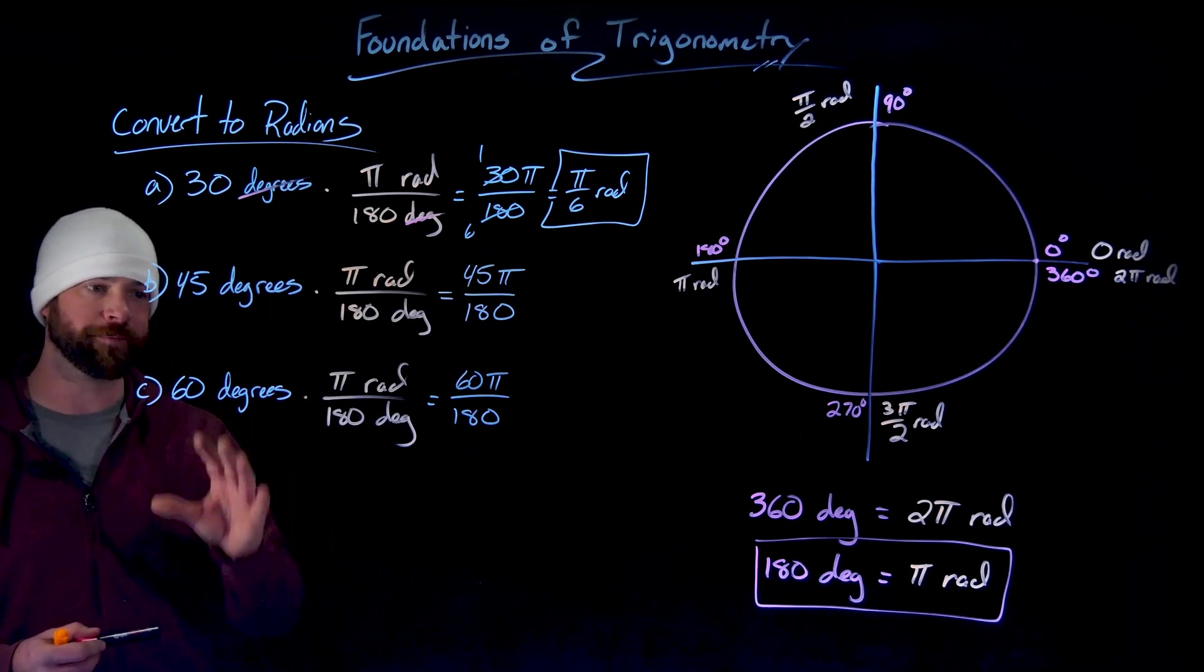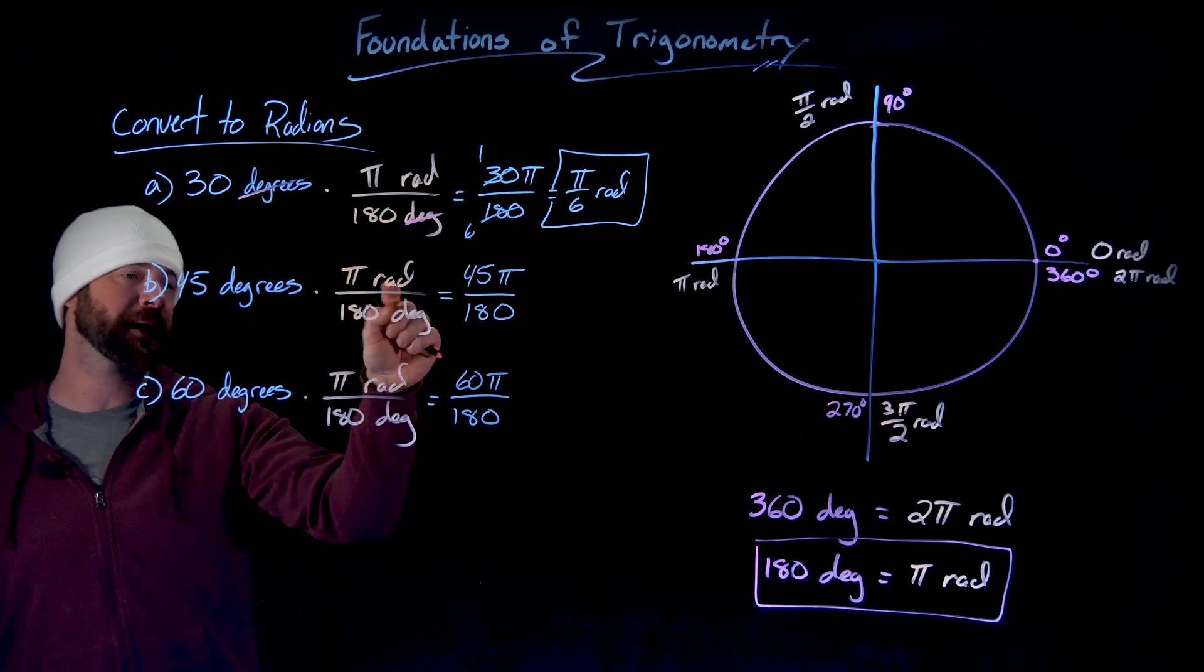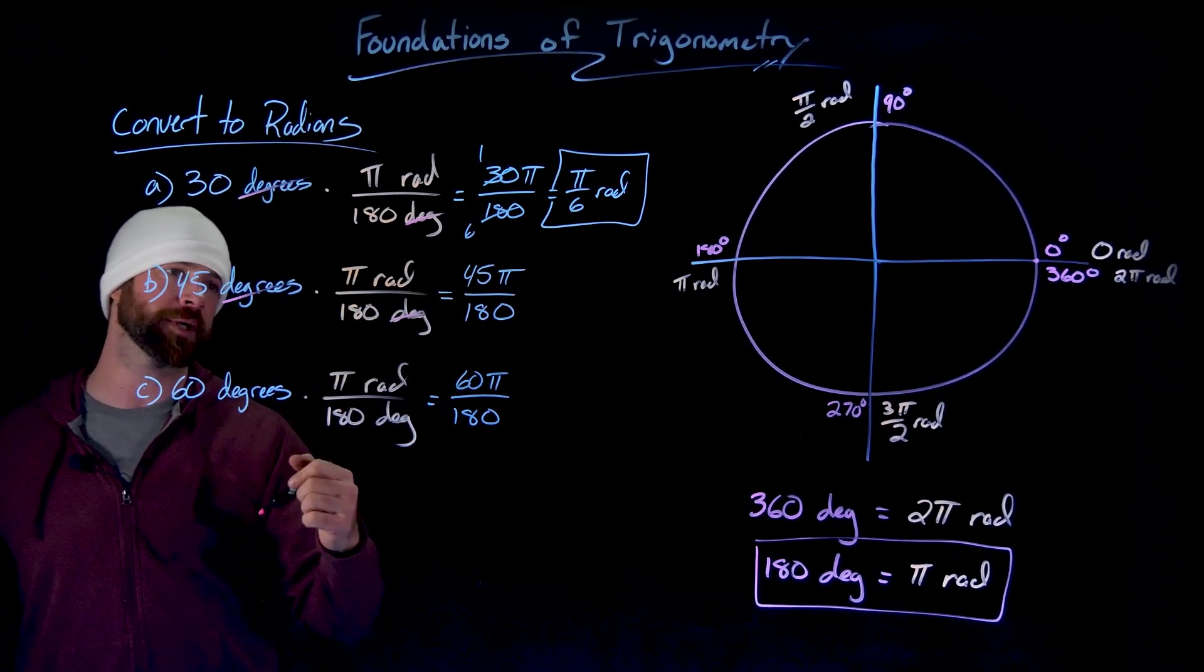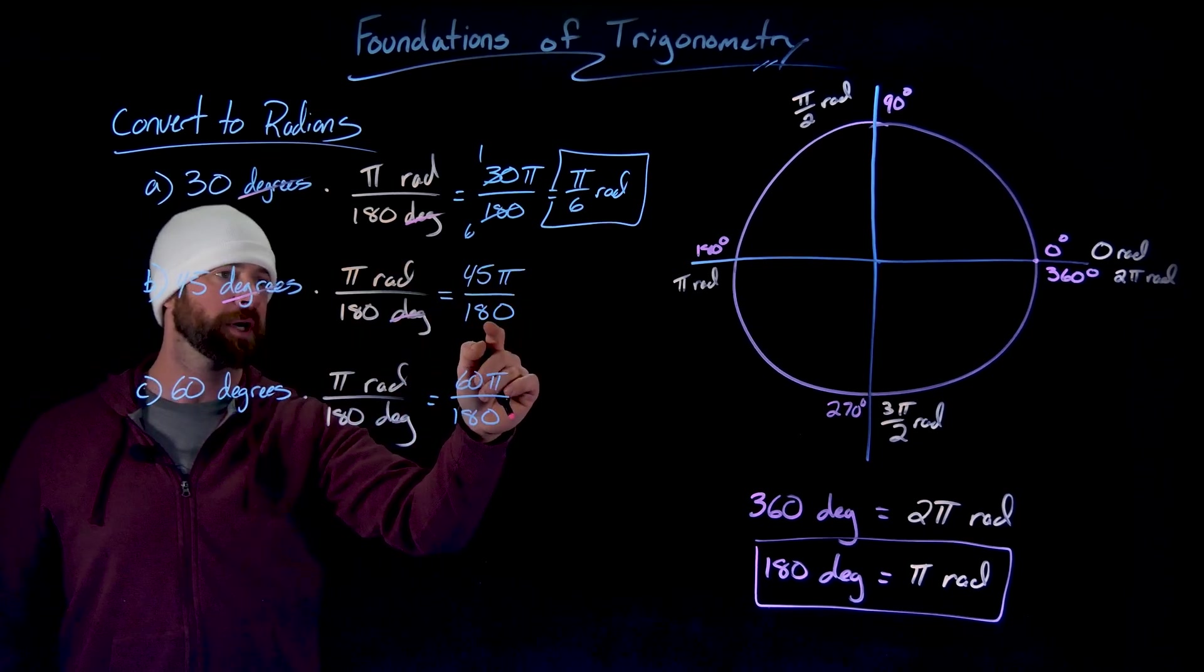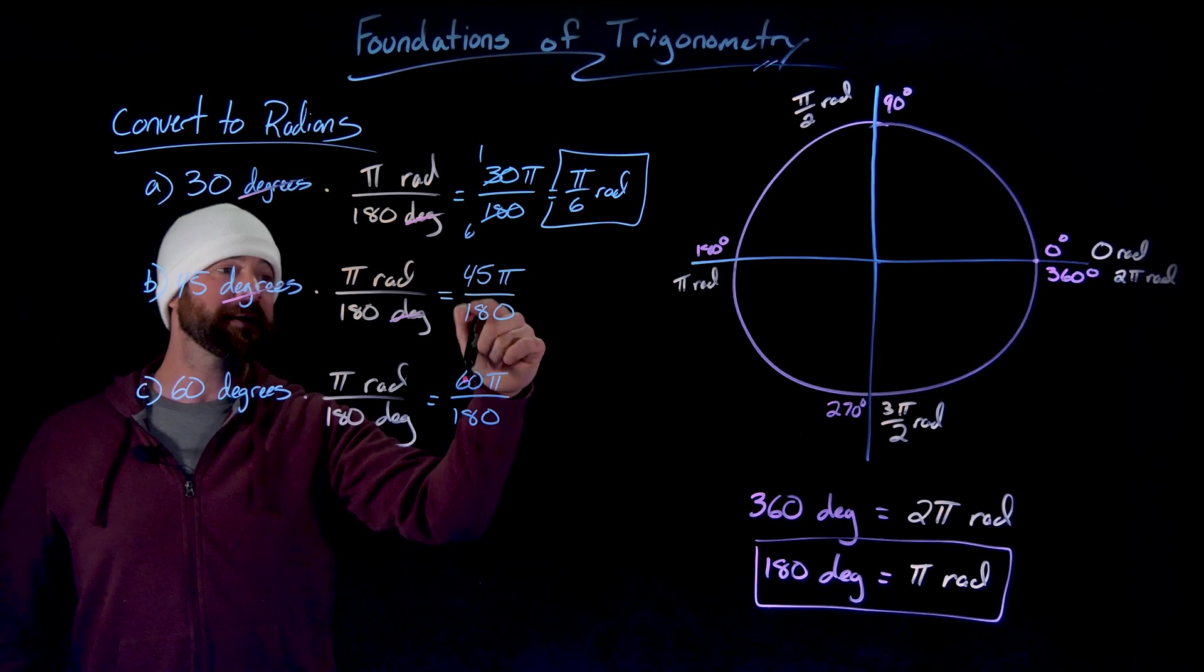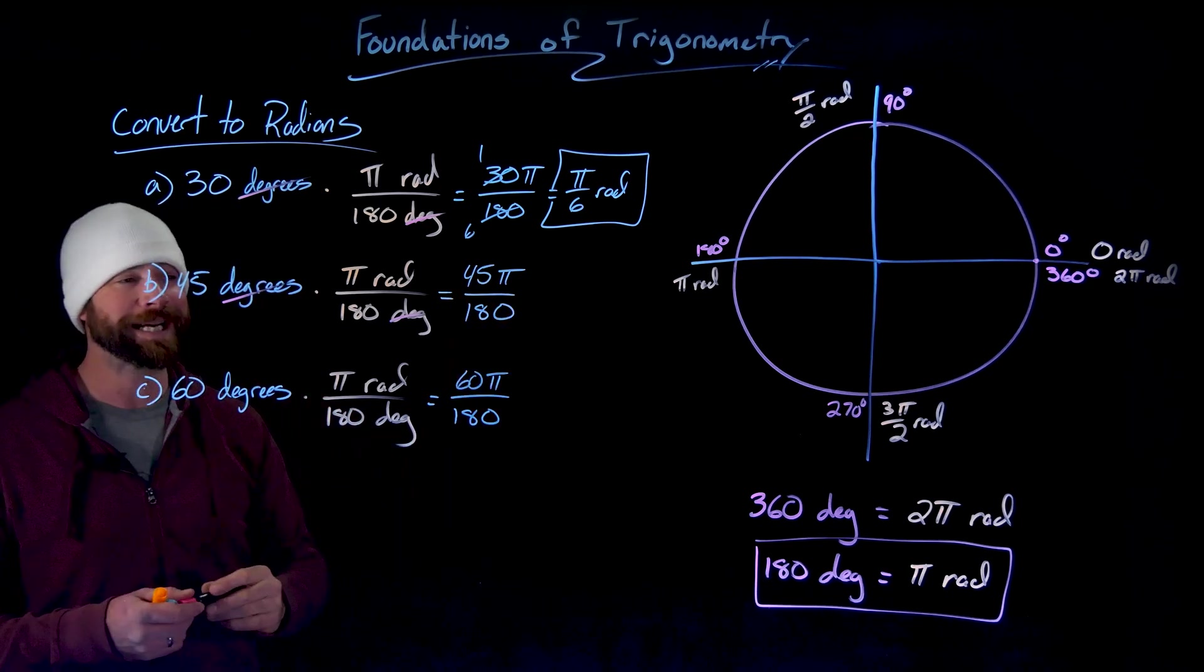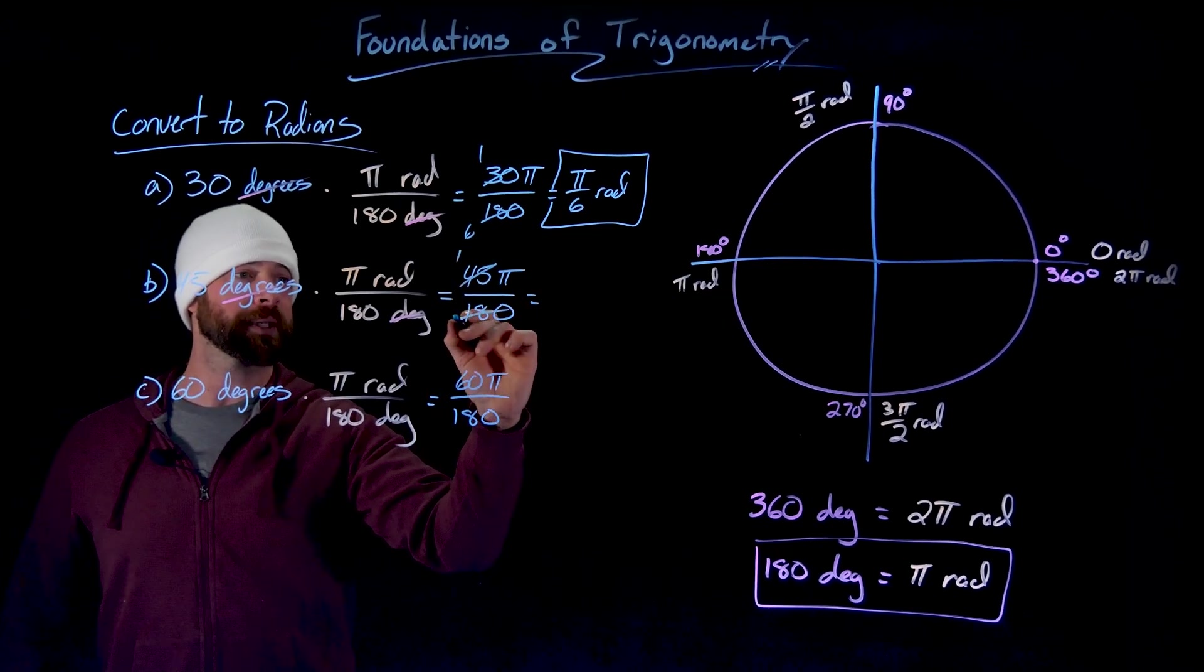And again here, for both 45 and for 60, what I'm going to do is multiply by this conversion factor of pi radians over 180 degrees. My degrees cancel, leaving me with the units of radians. When I multiply across, I'll have 45 pi over 180, I actually can divide 180 is divisible by 45. 45 goes into 180 four times. And so this will reduce down to a one, that's a four.